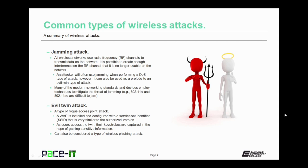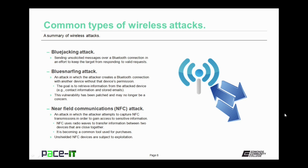The evil twin attack can also be considered a type of wireless phishing attack. Not all wireless attacks are against the 802.11 standard — some are implemented against Bluetooth and other types of wireless networks. The bluejacking attack is the sending of unsolicited messages over a Bluetooth connection in an effort to keep the target from responding to valid requests. A bluesnarfing attack is when the attacker creates a Bluetooth connection with another device without that device's permission. The goal is to retrieve information from the victim — the hacker is usually looking to get contact information or stored emails.